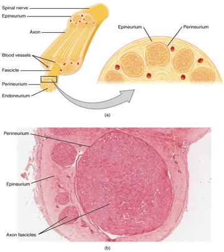Each nerve is covered on the outside by a dense sheath of connective tissue, the epineurium. Beneath this is a layer of flat cells, the perineurium, which forms a complete sleeve around a bundle of axons. Perineurial septae extend into the nerve and subdivide it into several bundles of fibers. Surrounding each such fiber is the endoneurium.